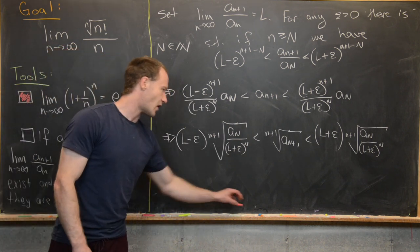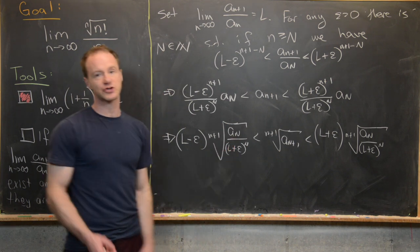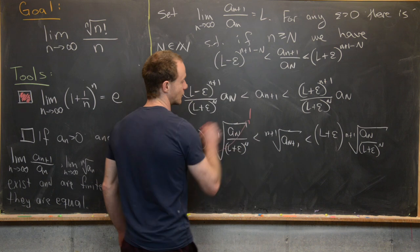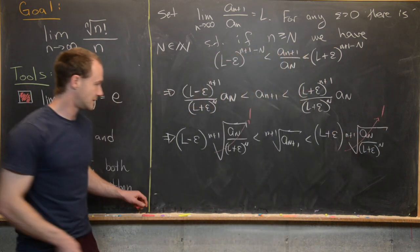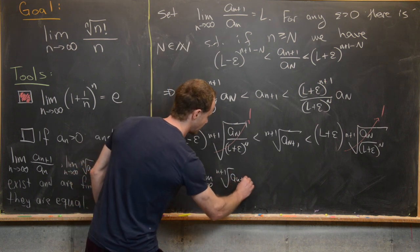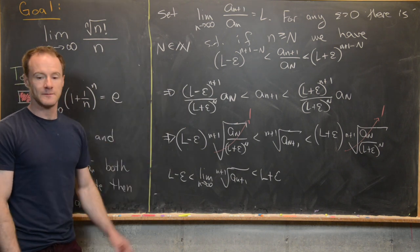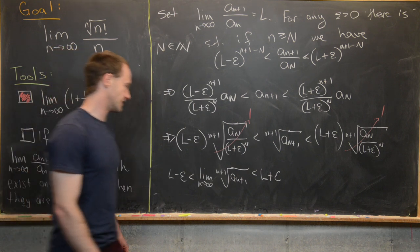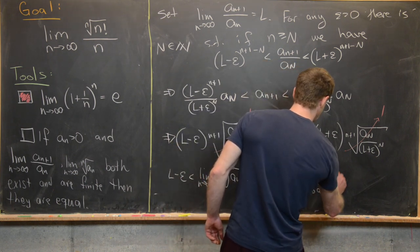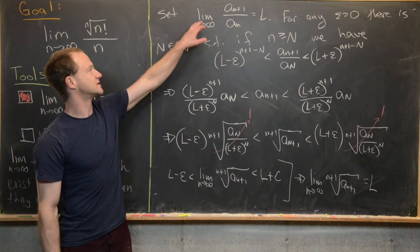Taking the limit of all parts as little n approaches infinity, the (n+1)th root of any fixed quantity goes to one. So the left and right sides both collapse to l minus epsilon and l plus epsilon respectively, giving us l minus epsilon is less than the limit as n goes to infinity of the (n+1)th root of a_{n+1}, which is less than l plus epsilon. Since this holds for all epsilon greater than zero, the limit must equal exactly l — which is what we wanted to show.